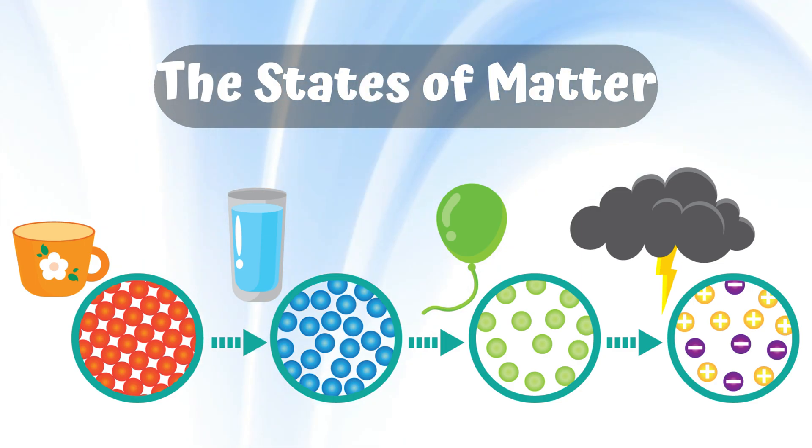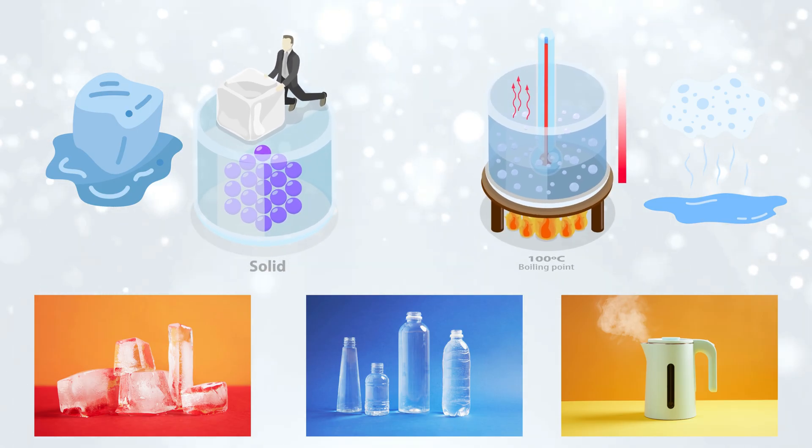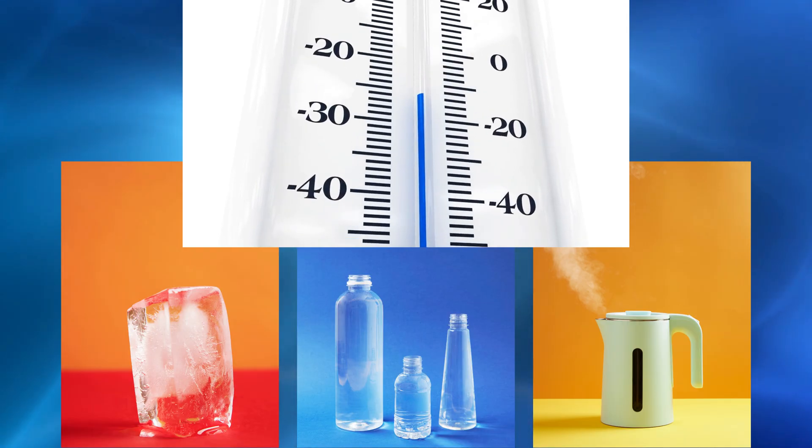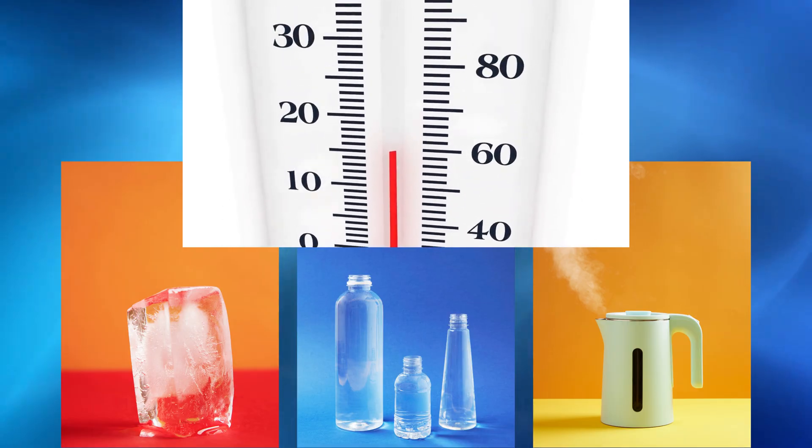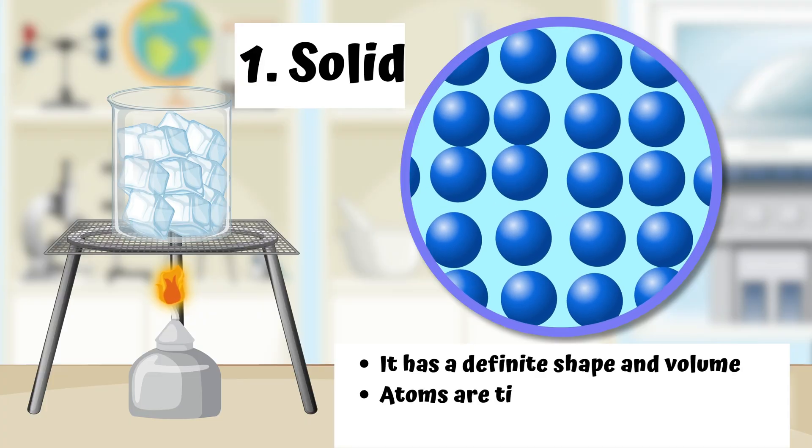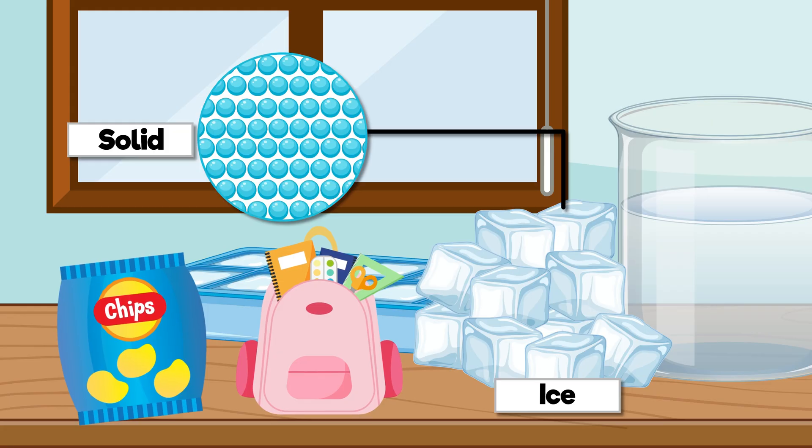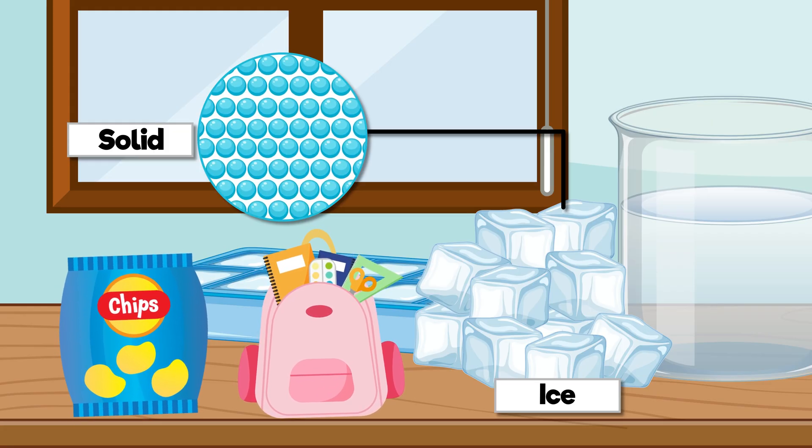Part 5. The states of matter. Now let's get super cool or super hot. Because matter comes in different states or forms depending on its temperature. Solid. It has a definite shape and volume. Atoms are tightly packed and just vibrate in place. Some examples are ice, chips, and school bag.